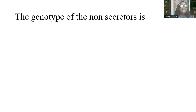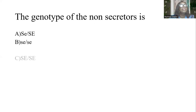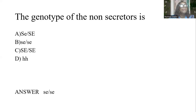The genotype of the non-secretor is option B: small-s small-s (sese). That is the genotype of an individual who is a non-secretor.